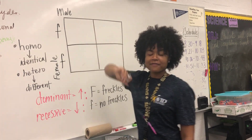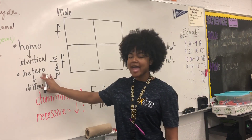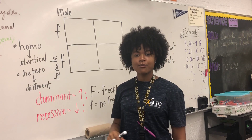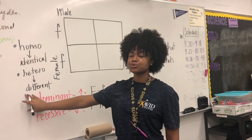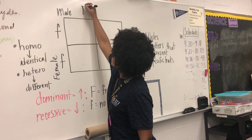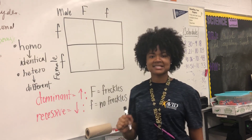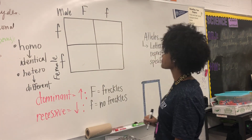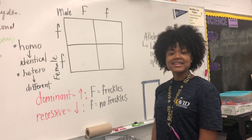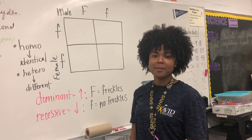The male, or the father, is going to be heterozygous for freckles, which means that he is going to have two different alleles. So we're going to do a capital F and a lowercase f. The next step of our Punnett square is to drag and drop the alleles.